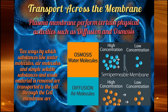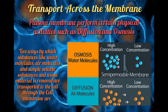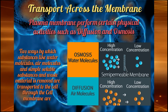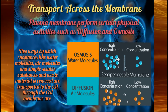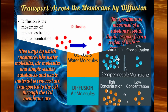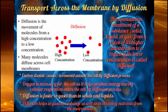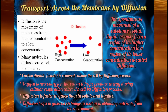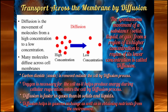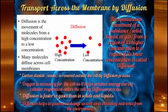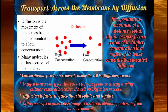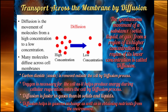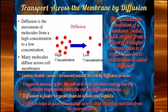Now let us see how substances are transported through the plasma membrane. The transport of substances through the cell membrane takes place by two ways: diffusion and osmosis. What is diffusion? The spontaneous movement of a substance — solid, liquid, or gas — from a region of its higher concentration to a region of its lower concentration is called diffusion. Koi bhi solid, liquid ya gaseous substance, ek region jahaan pe uski concentration zyada hai, wahaan se move karke, ek aise region mein jaata hai jahaan pe uss substance ki maatra kam hai — is process ko diffusion kehte hai.